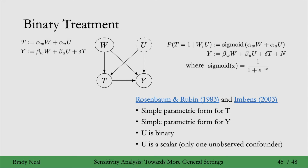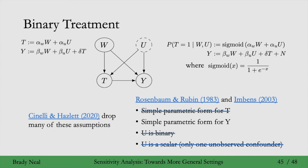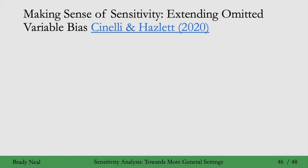I want to contrast them with this recent paper by Cinelli and Hazlett, where they drop many of these assumptions. For example, they don't need to have a simple parametric form for T — they don't assume anything about the parametric form for T. Similarly, U can be whatever, and they even allow U to be more than one confounder. We'll now give a bit more information about this paper.